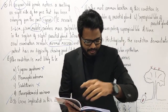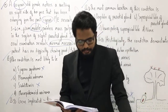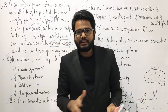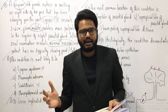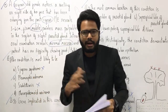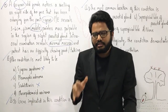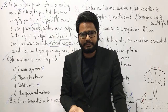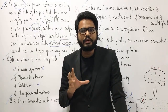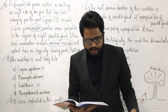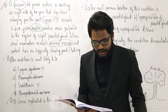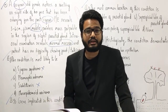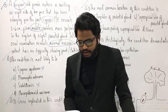Now let's get to the homework questions. You can make a note and get back via mail for discussion. First question: pleomorphic adenoma is most commonly seen in the parotid gland, but it's also found in submandibular, sublingual, and minor salivary glands — though occurrence in the sublingual gland is very rare. If pleomorphic adenoma occurs in minor salivary glands, which is the most commonly affected site within the oral cavity?